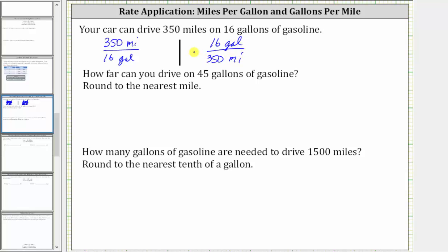Now let's determine which rate to use to answer the two questions. To determine how far you can drive on 45 gallons of gasoline, we need to use the rate that expresses the number of miles per the number of gallons, which is this first rate here. So if we multiply 45 gallons by the rate of 350 miles per 16 gallons, we can determine the number of miles. Let's first write 45 gallons as a fraction with the denominator of one.